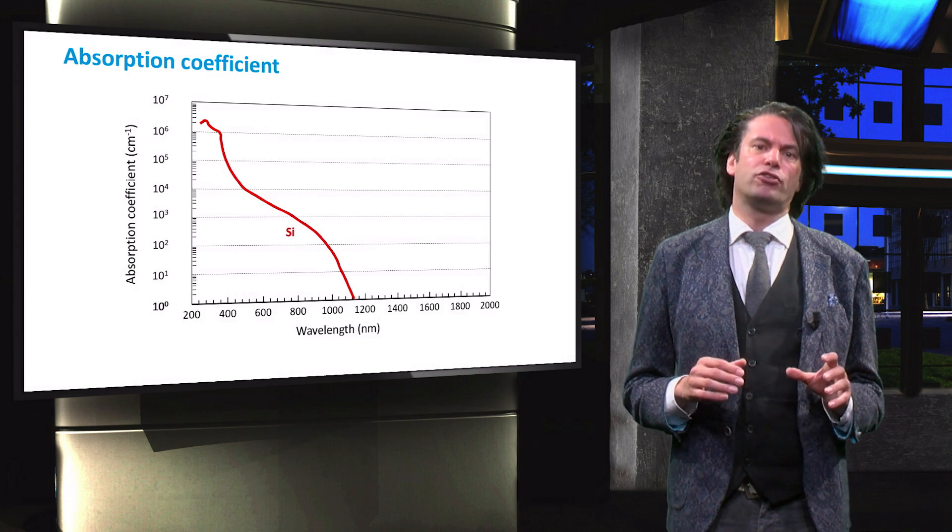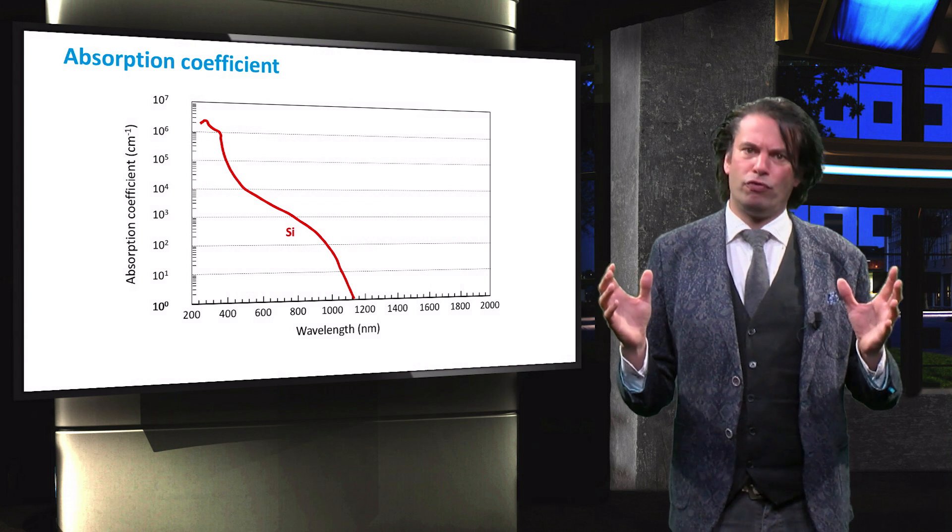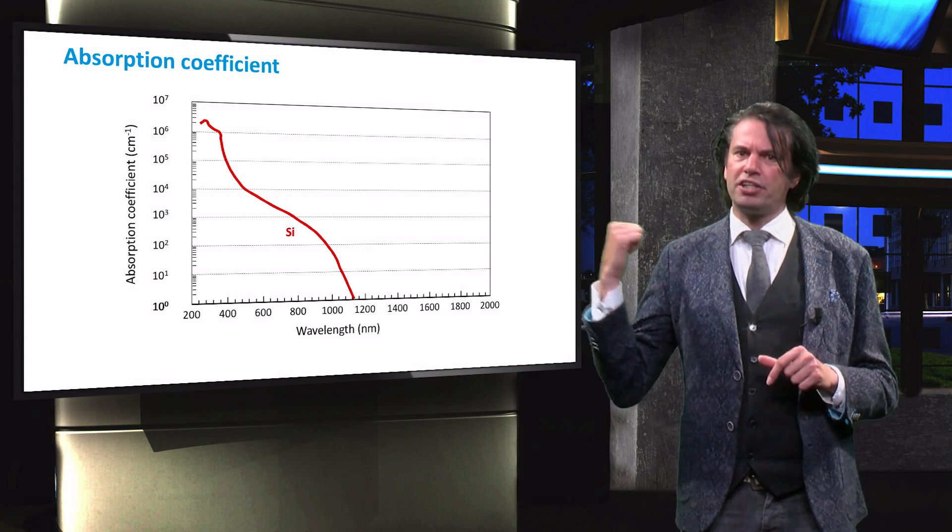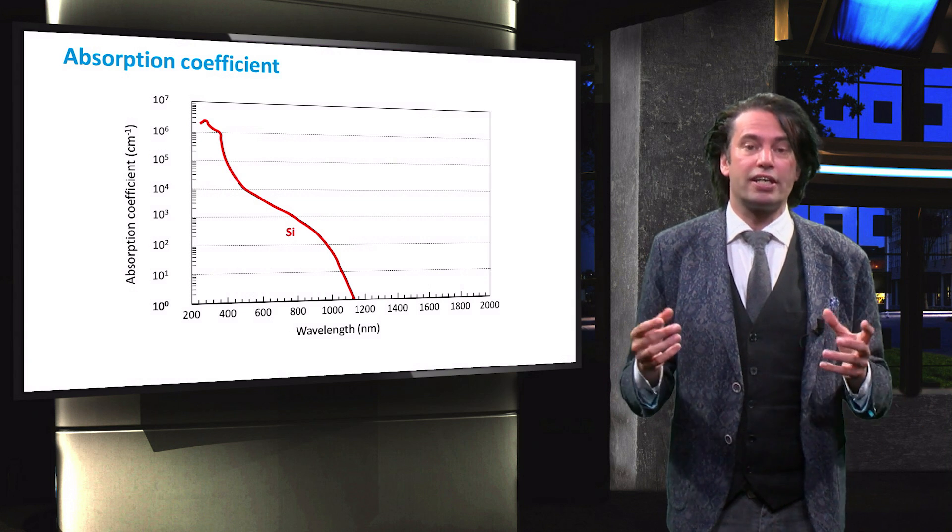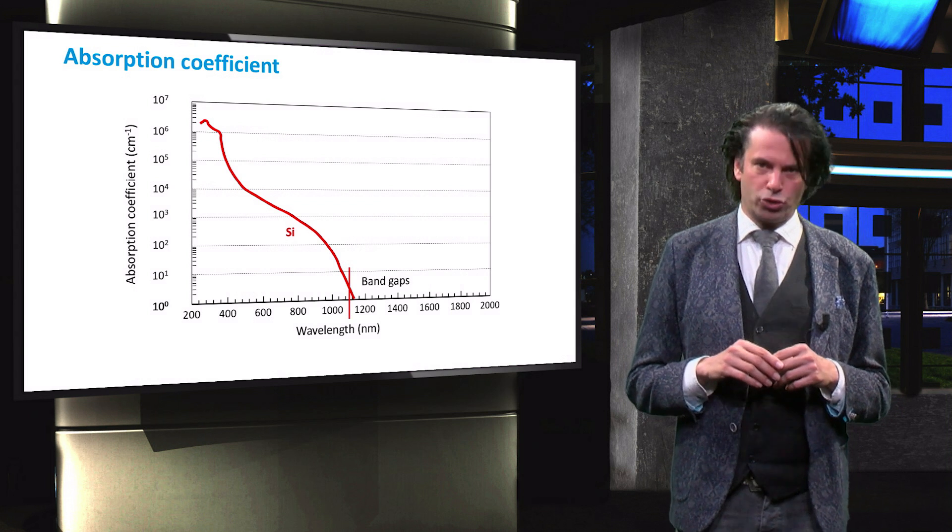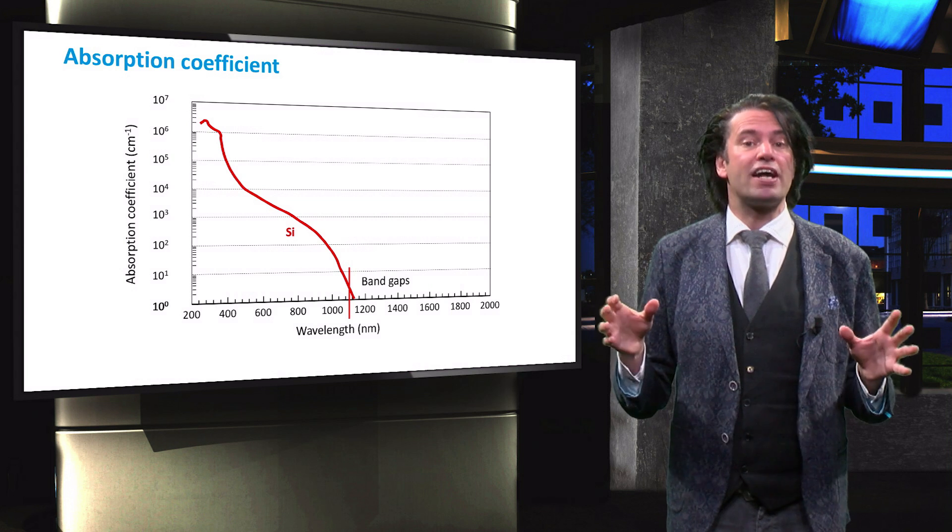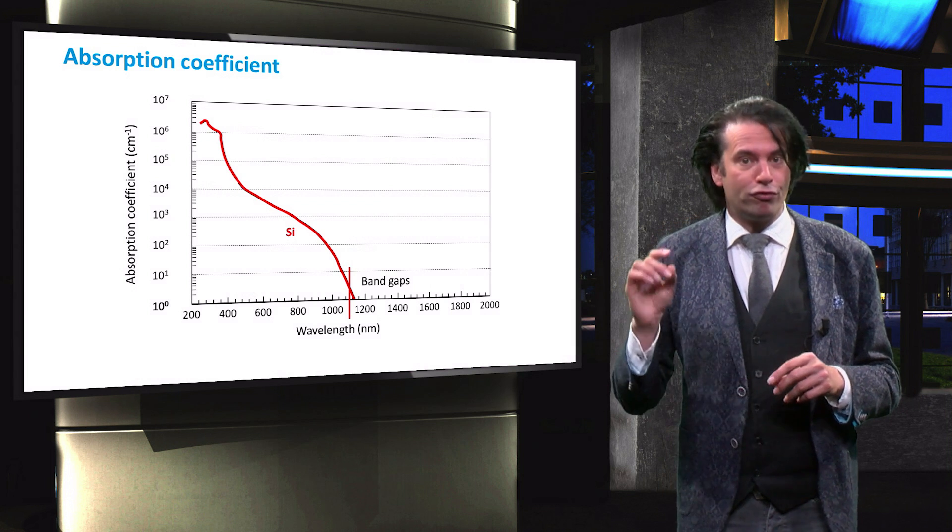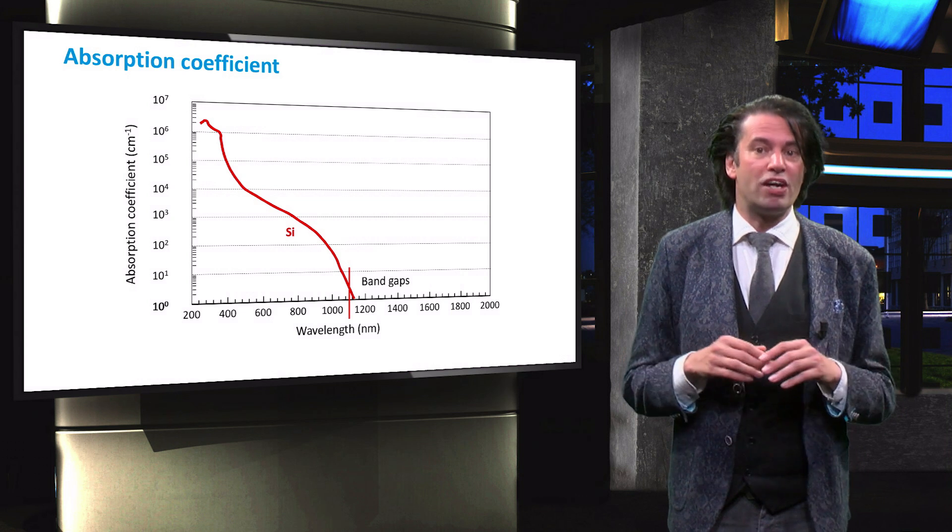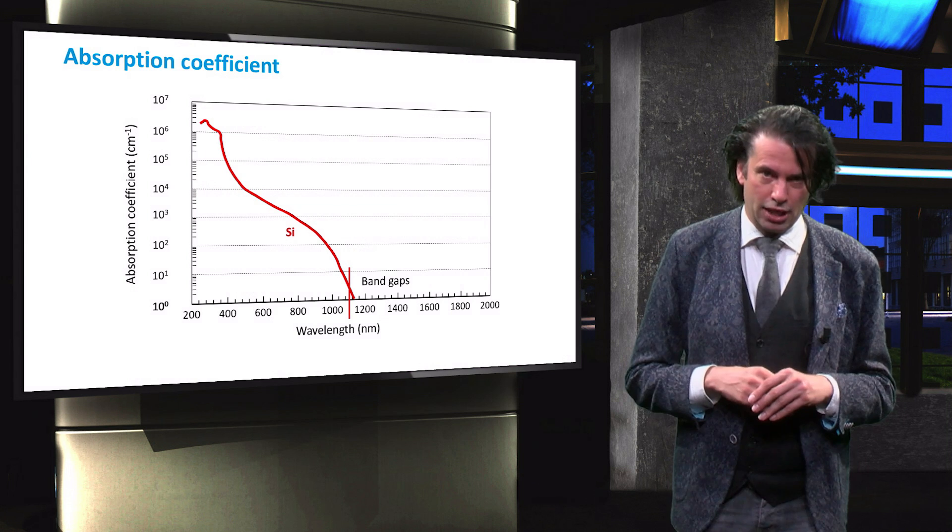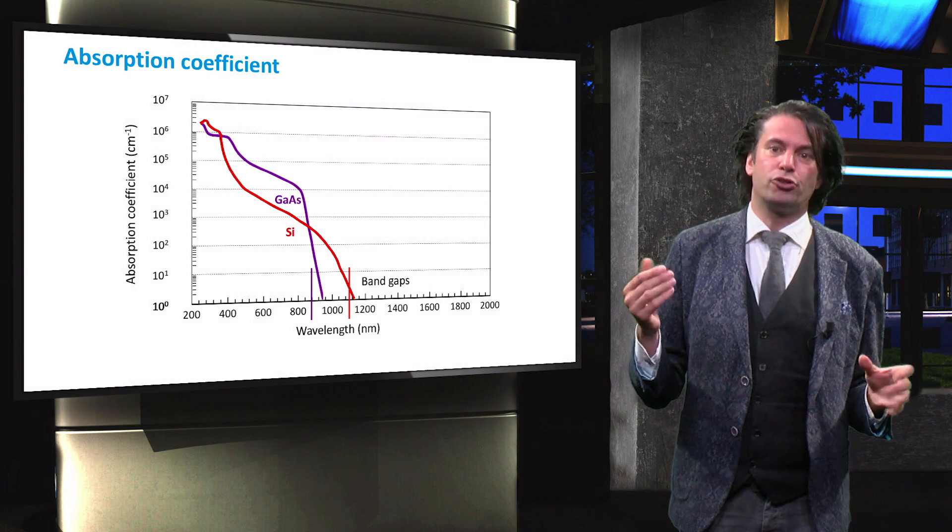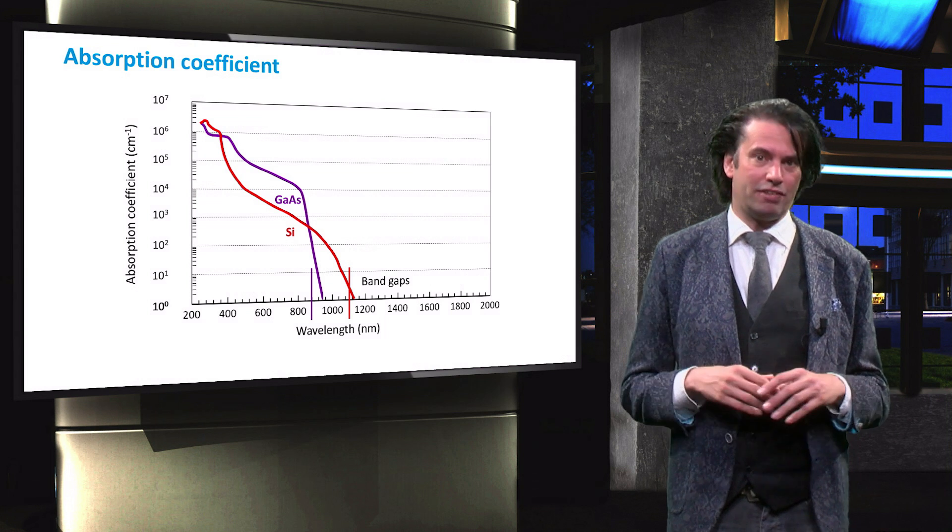The direct band gap of gallium arsenide of 1.42 eV strongly affects its absorption characteristics. Plotted here is the absorption coefficient of crystalline silicon as a function of the photon wavelength. This red line on the horizontal axis indicates the wavelength corresponding to the band gap energy of crystalline silicon. With a band gap of 1.12 eV, the corresponding wavelength is around 1100 nm. Gallium arsenide has a higher band gap energy, corresponding to a wavelength of about 870 nm.